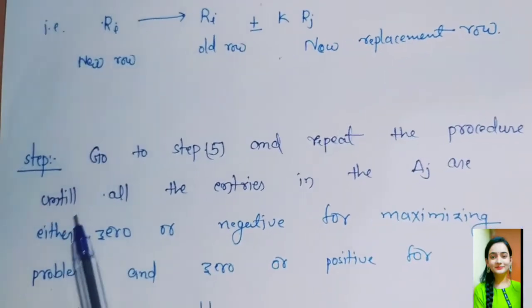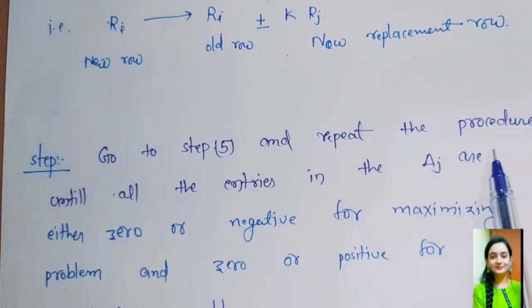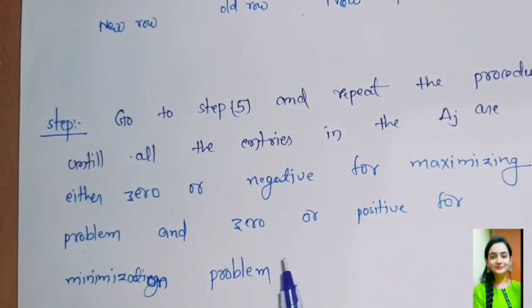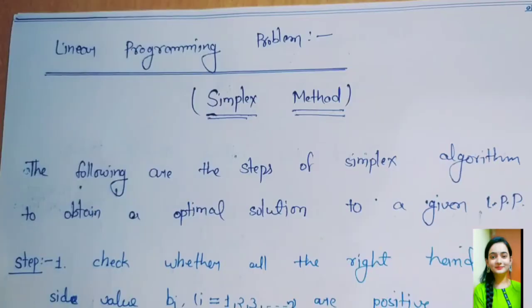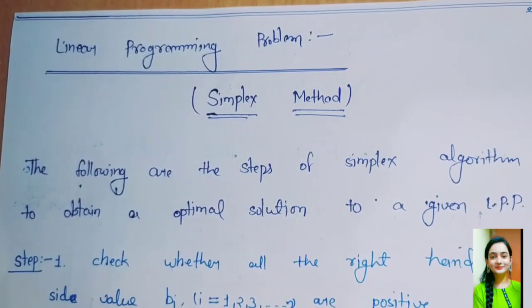Lastly, go to Step 5 and repeat the procedure until all entries in delta j are either zero or negative for maximization problem, and zero or positive for minimization problem. So these are the steps involved in simplex method. Thank you.